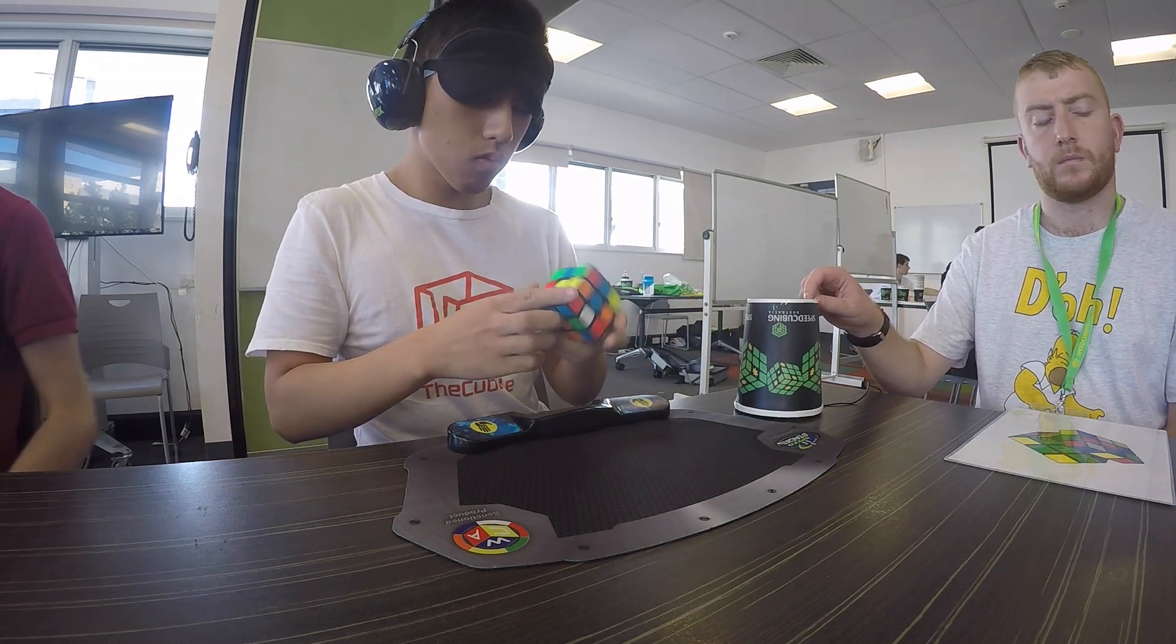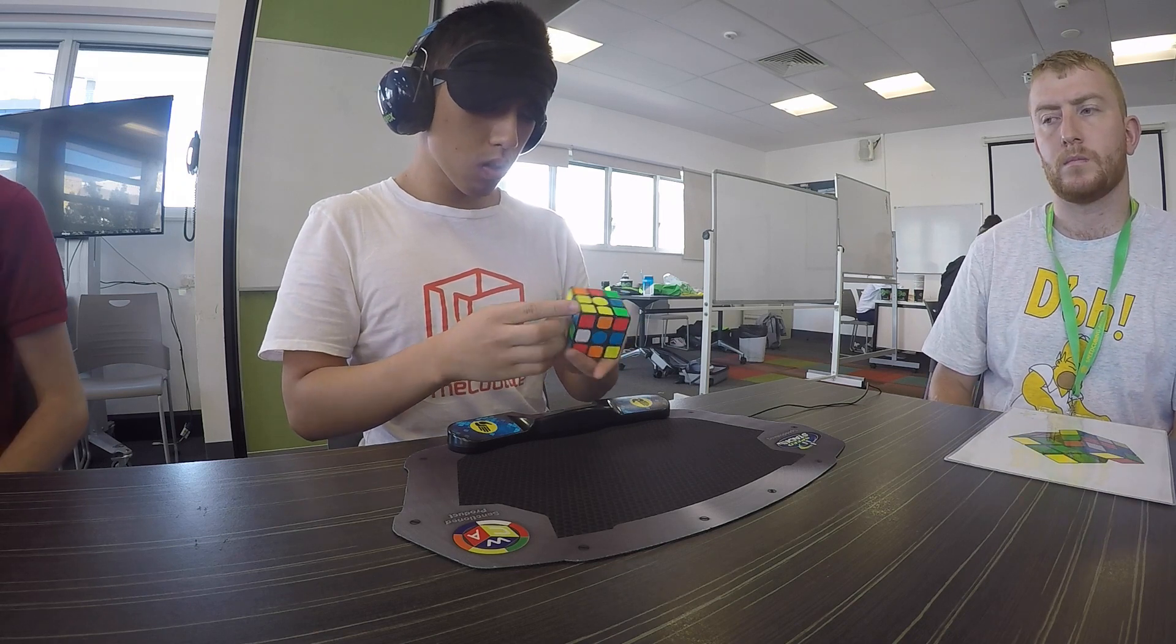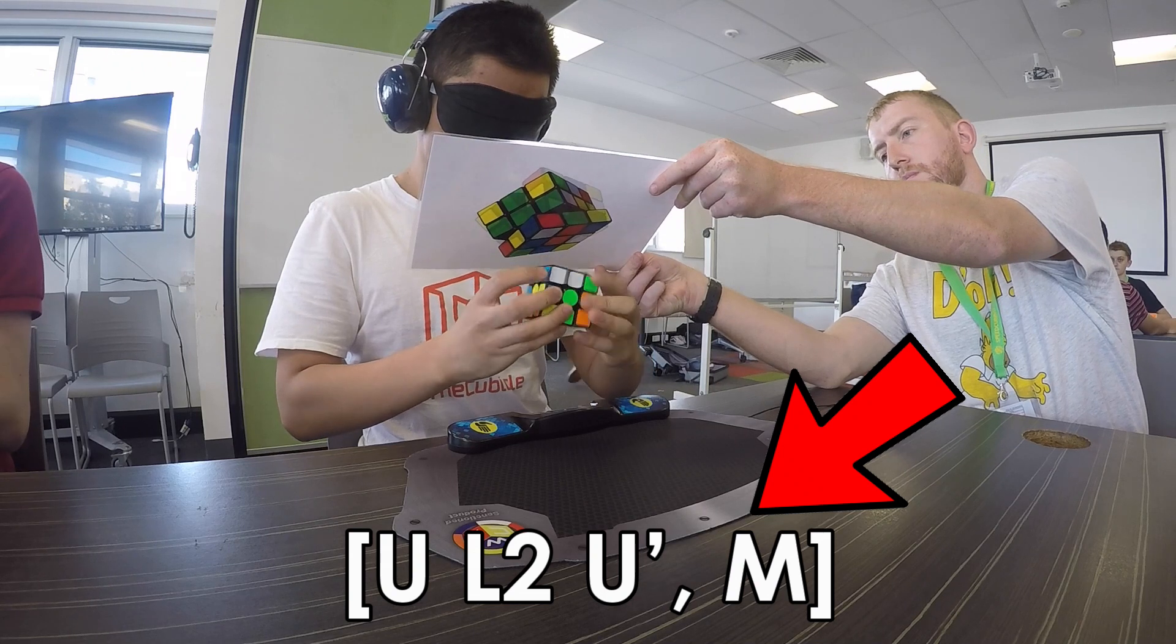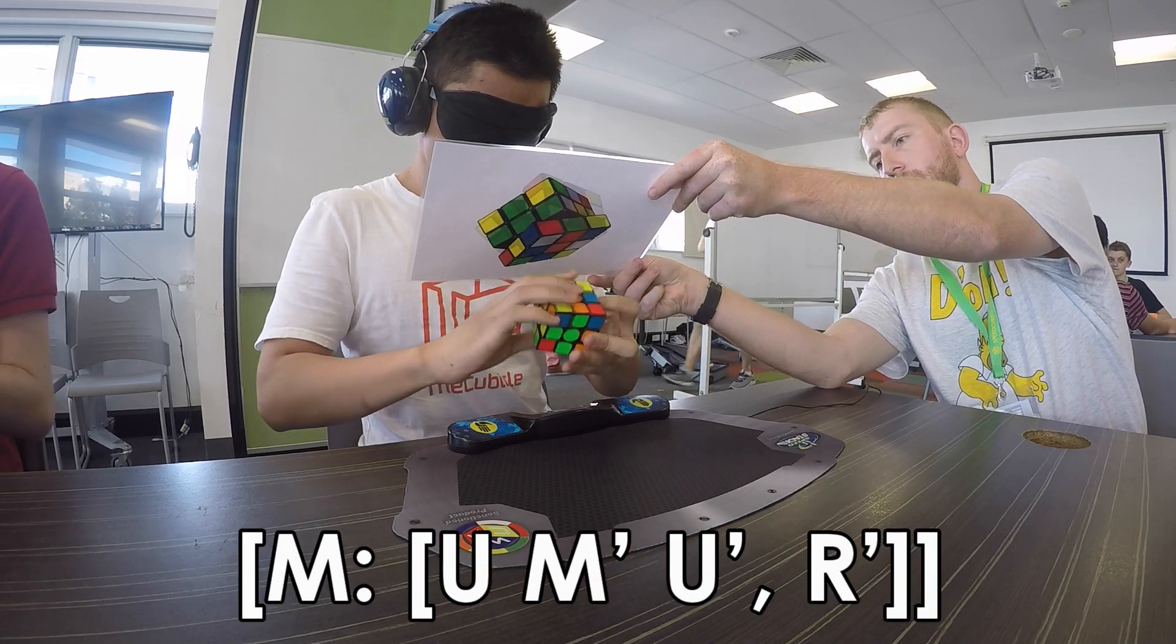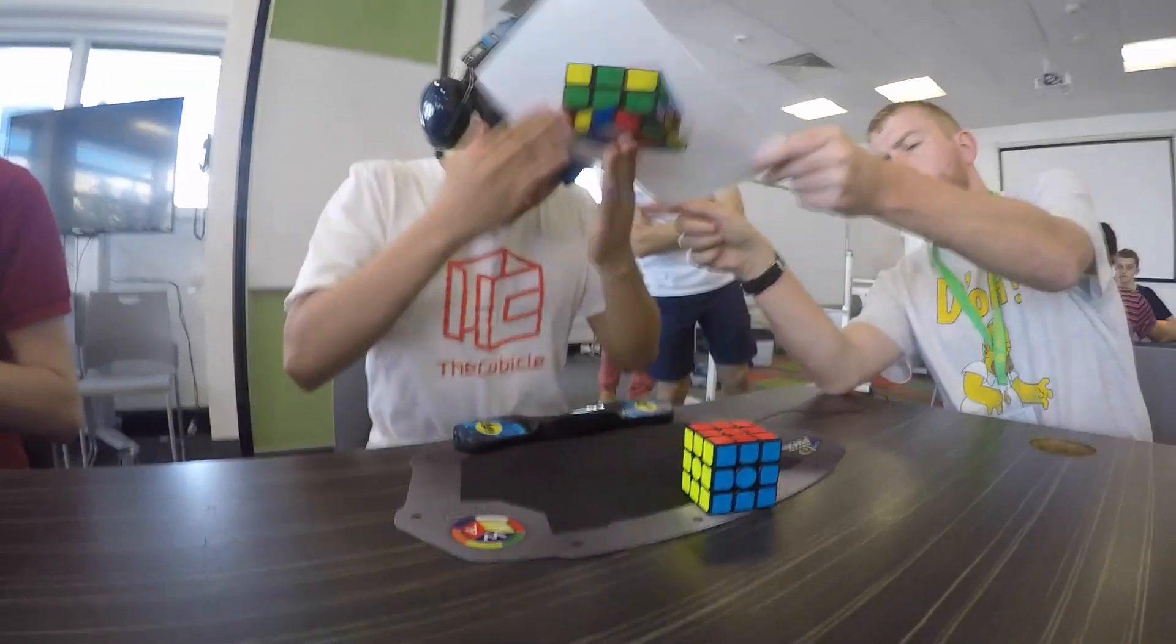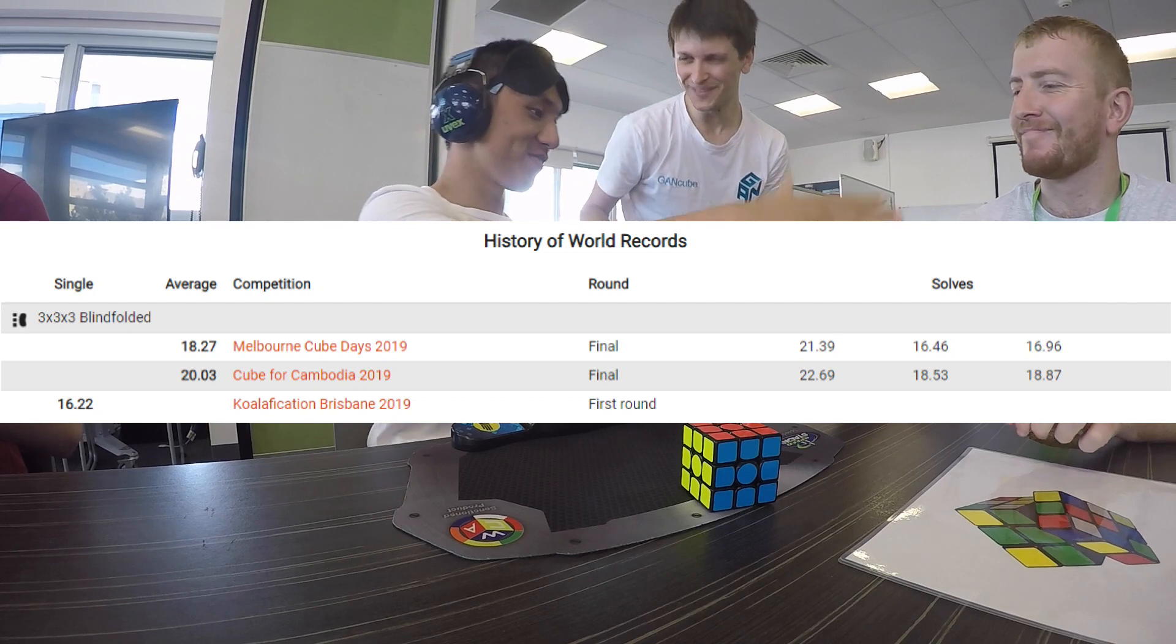If you've seen a reconstruction of me solving the Rubik's cube blindfolded in world record time, you might have seen me use a lot of these weird algs with brackets around them. These are called commutators, and if you know how they work, you can more or less learn the exact same method I used to solve the cube blindfolded in record time.